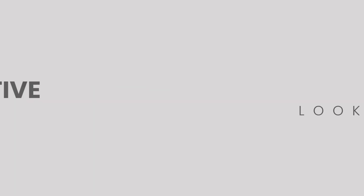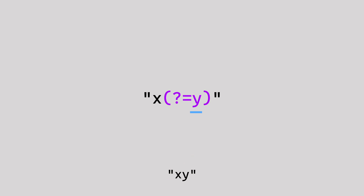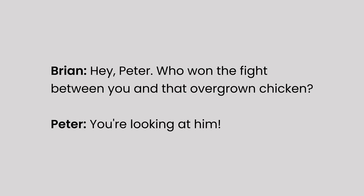Let's start with the positive look-ahead. When placed after a character, this says match the current character only if it is followed by the character I placed after the equal sign in the parentheses. If X is by itself you won't get a match because it has to be followed by Y. You could, for example, use a positive look-ahead to extract names from the transcript of a conversation between two people.